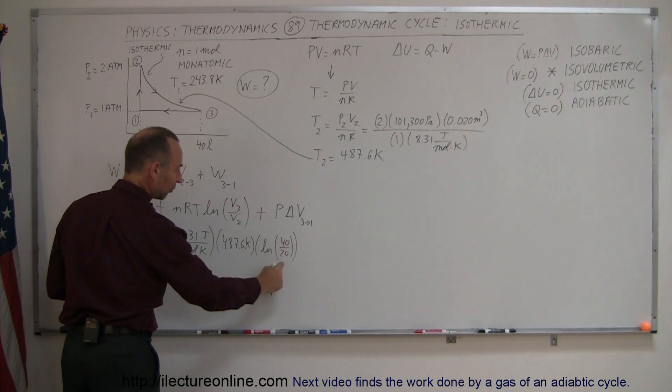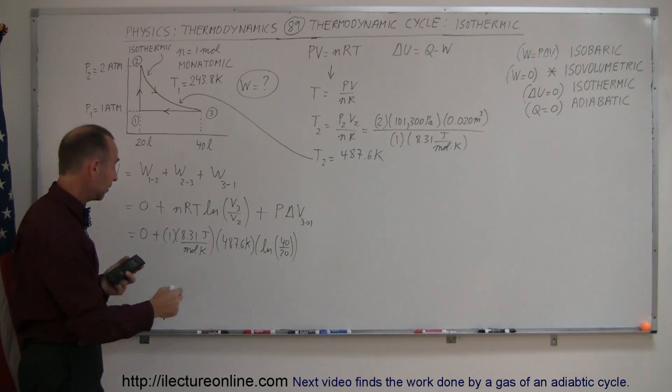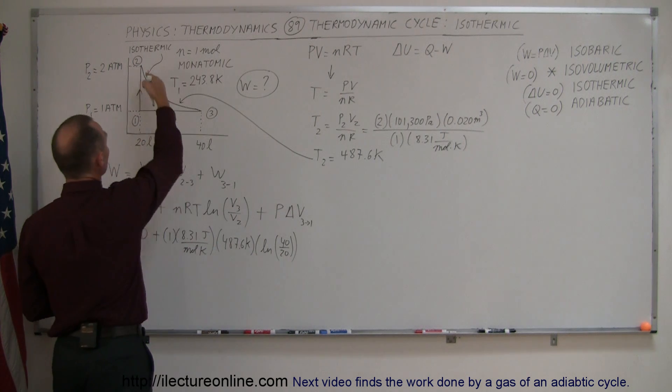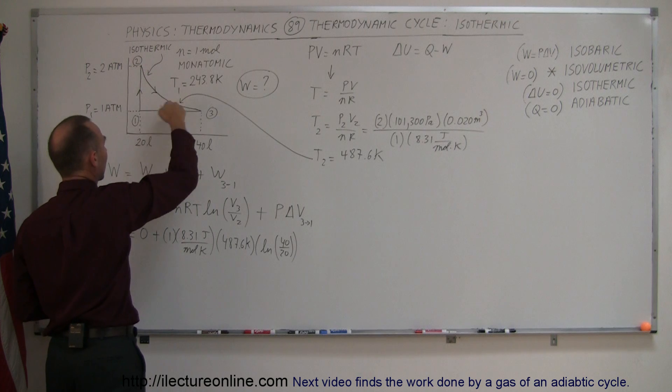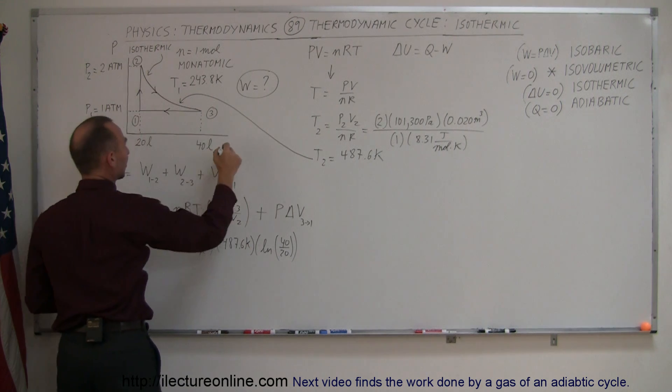And notice that this is going to be a positive quantity, because the natural log of a number greater than one is positive, so this is positive work done, which makes sense, because we go from left to right on the PV diagram. I didn't put my P's and V's down, so there we go.